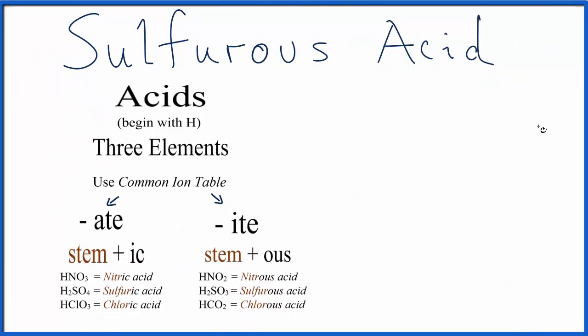Acids begin with H, at least at this level, so we're going to write our H. Then we're going to work backwards using a common ion table to figure out what polyatomic ion is attached to the hydrogens to make our acid.